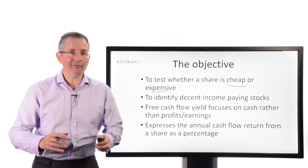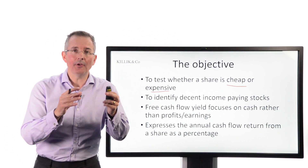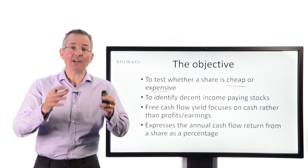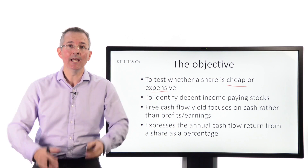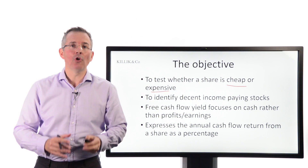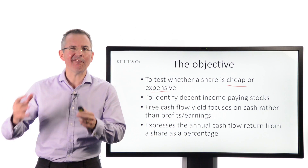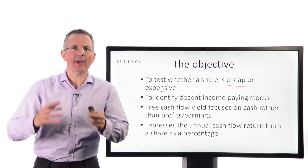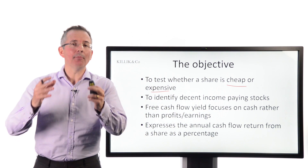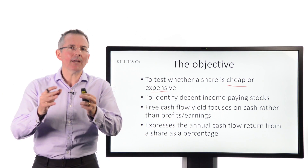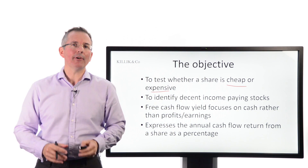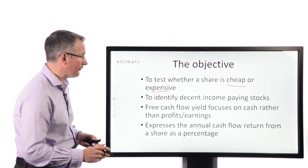Free cash flow yield is going to focus on cash rather than earnings. There are various reasons for focusing on cash. Cash is king is the old cliche. Cash is harder to manipulate. Cash is not subject to one or two of those accounting funnies — depreciation, amortization, the way that people account for fixed assets. So for various reasons, cash is often seen as a stronger metric than profits or earnings.